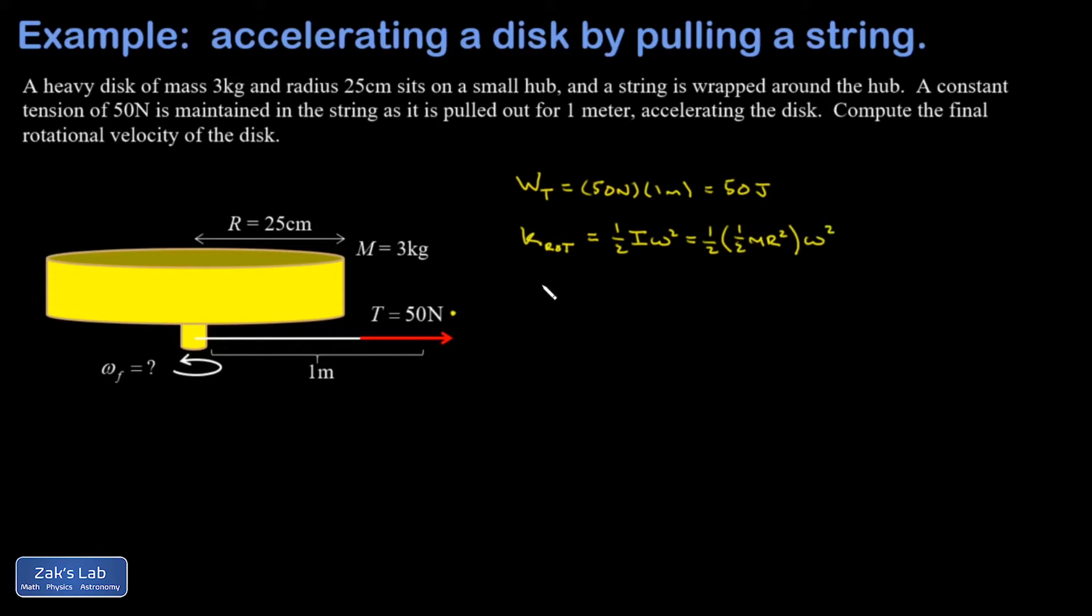So finally, I can put it all together and say that 50 joules is equal to—I'm going to go ahead and combine the fractions there—one fourth times the mass of the disk, three kilograms, radius of the disk, 0.25 meters. That has to be squared times my final angular velocity squared. So this is a real quick problem.